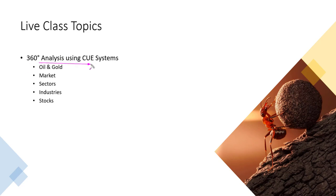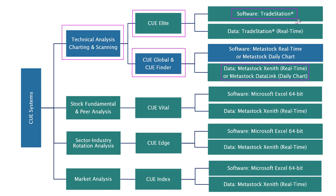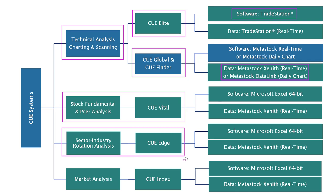In today's topics I am going to use the 360 degrees analysis techniques to look at oil and gold, the market sectors, industries, as well as stocks. These are the queue systems I use in my trading. For technical analysis, charting and scanning I use Queue Global and Queue Finder — they run on MetaStock — and I also use Queue Elite that runs on TradeStation. For stock fundamental and peer analysis I use Queue Vital. For sector and industry rotation analysis in real time I use Queue Edge, and for market and index analysis I use Queue Index. All systems run in 100 percent real time using data from MetaStock Xenith.